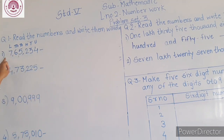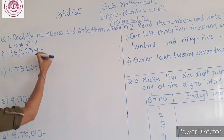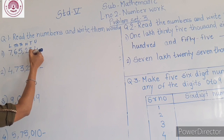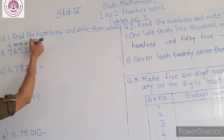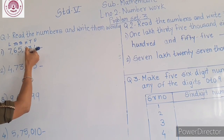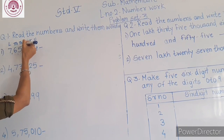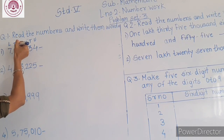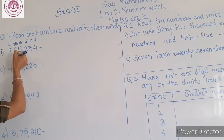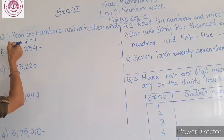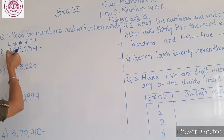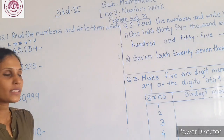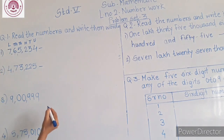Let's see the first one. Here 4 is in the unit place, 3 is in the tenth place, 2 is in the hundred place, 5 is in the thousand place, 6 is in the ten thousand place, 7 is in the lakh place.